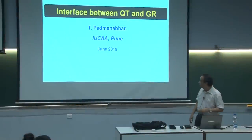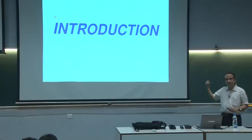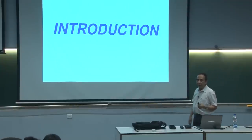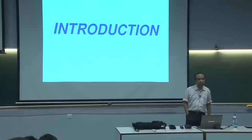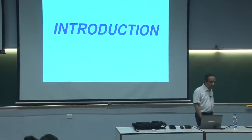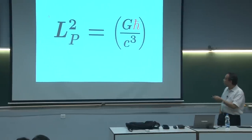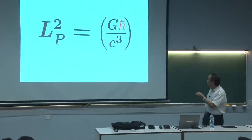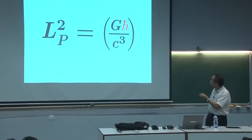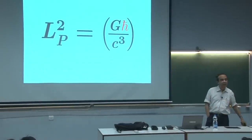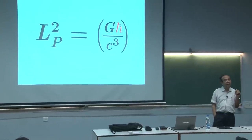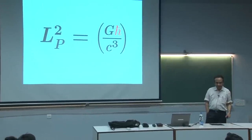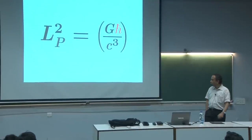Let me now begin. This is the introduction and I want to first explain what this whole course is about. I have listed here in a title the region of contact and conflict which occurs when you put together quantum theory and general relativity, and I have listed three specific items. There is a reason for that, but let me run over the items one by one.